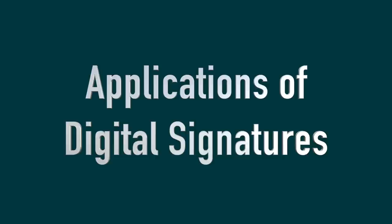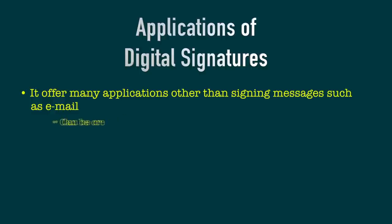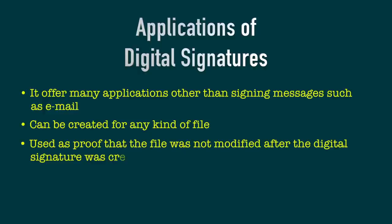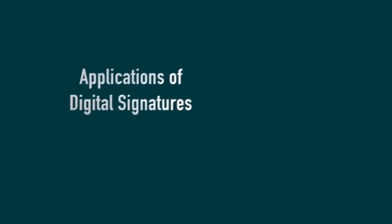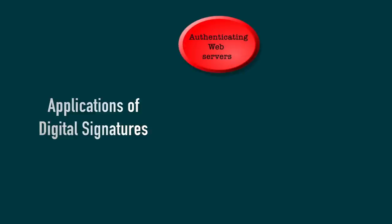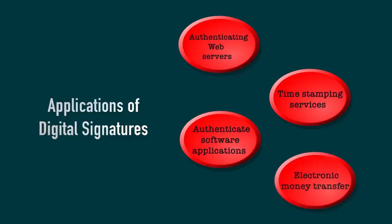Now let us discuss applications of digital signatures. Digital signatures offer many applications other than signing messages such as email. A digital signature can be created for any kind of file and used as proof that the file was not modified after the signature was created. It can also be used to make a file unique, for example by appending a serial number and signing the result. Other applications include authenticating web servers, time-stamping services, authenticating software applications, and electronic money transfers.